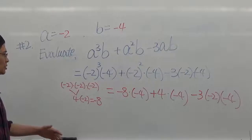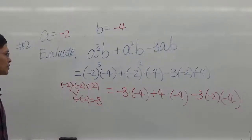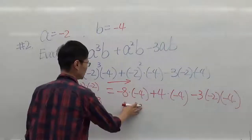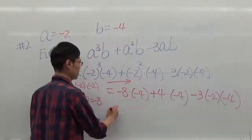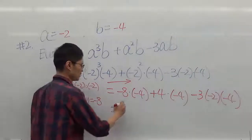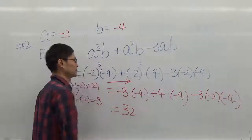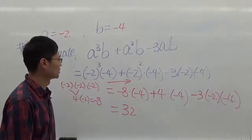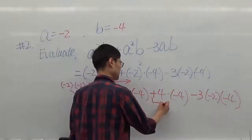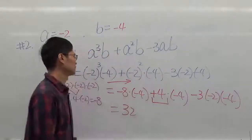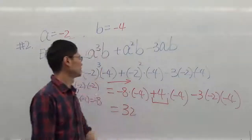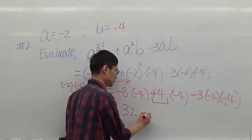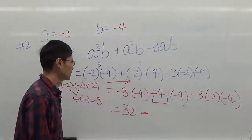Next we're going to do the multiplication, working from left to right. We have a negative times a negative, which gives a positive — 8 times 4 is 32. The next term is positive 4 times negative 4. A positive times a negative is negative, so we write negative, and 4 times 4 is 16.